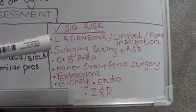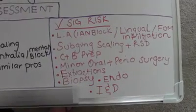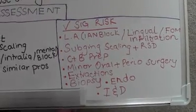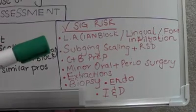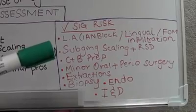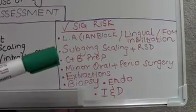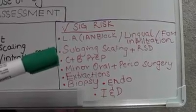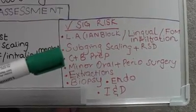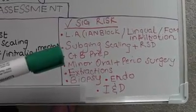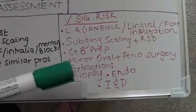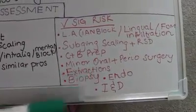The significant risk procedures include local anesthetic with nerve block, or lingual or floor-of-the-mouth infiltration. Subgingival scaling and root surface debridement are included — if the patient has a lot of gingival disease, these procedures can cause excessive gingival bleeding. Crown and bridge preparation is also on the list, as the margin may be below the gingival level and can cause excessive bleeding. Minor oral surgery procedures such as flap procedures, periodontal surgery, and gingivectomy are included, as well as extractions, biopsy, endodontics, and incision and drainage.